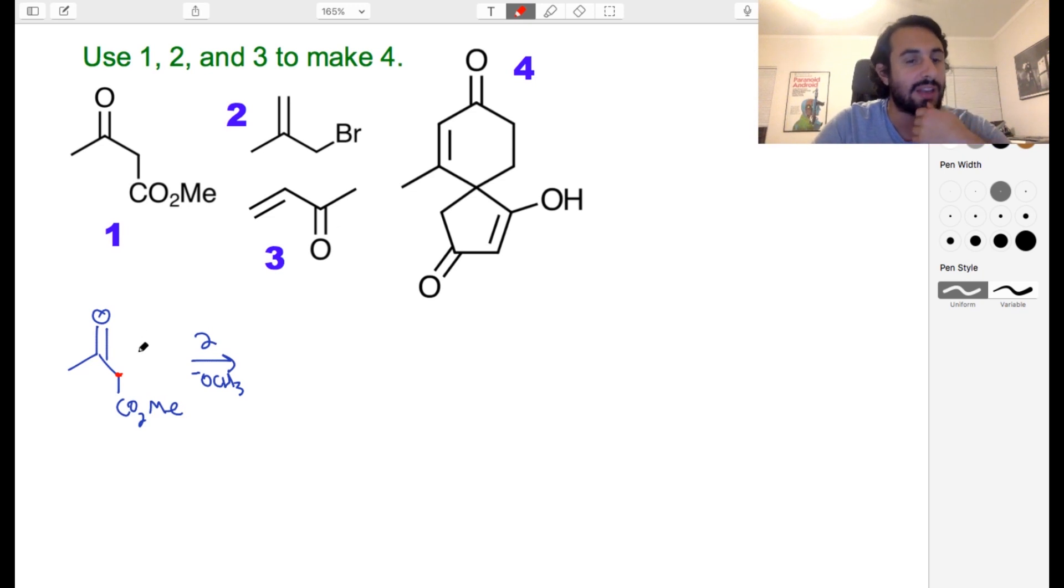It's definitely going to enolize there because it is adjacent to both carbonyls, so the pKa is quite a lot lower at this location. We're going to enolize there and we're going to attack number two right there - just basic SN2. I'm not really going to show any mechanisms here, I don't have quite enough room to show all that.